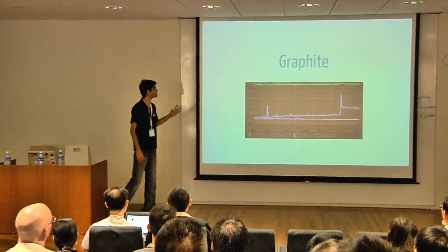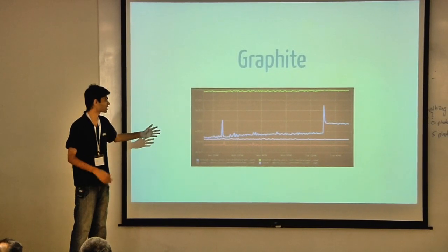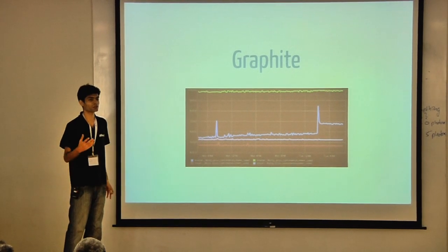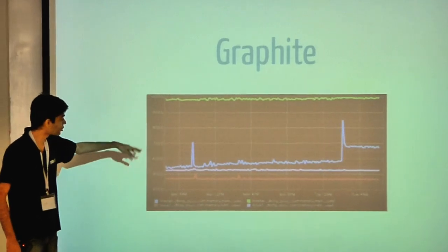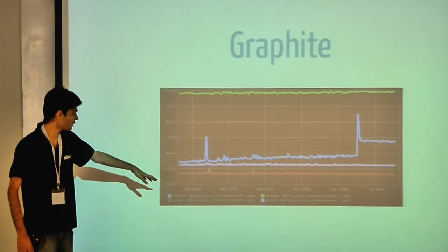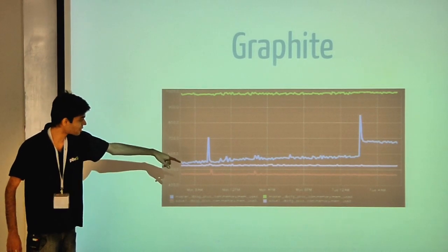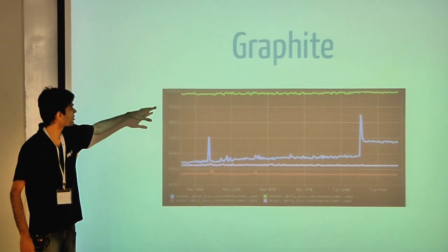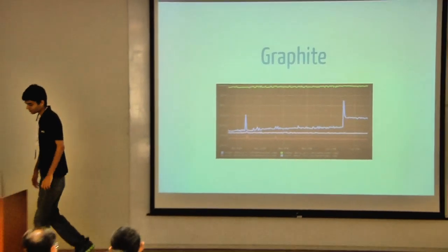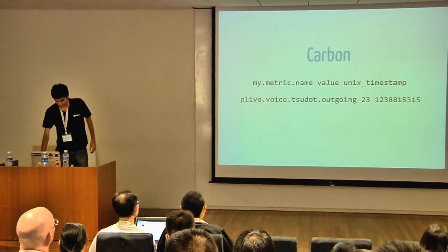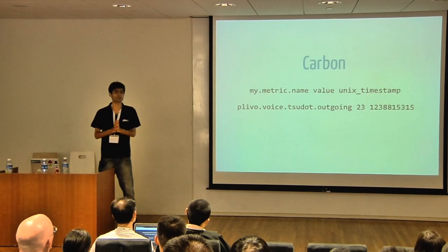Graphite is an awesome open source tool where you just dump in data and it will generate graphs based on what data you put in. You can see here there are four graphs about memory on our DB servers. You can see this green DB CFG is like 1000 percent of memory.